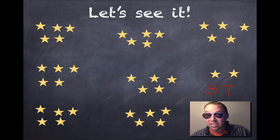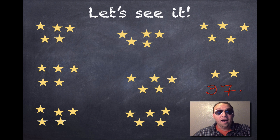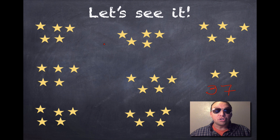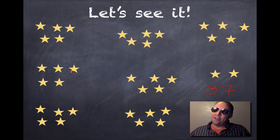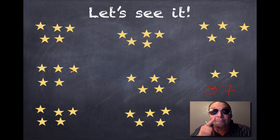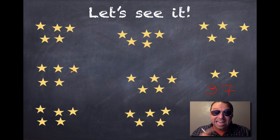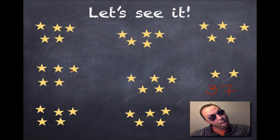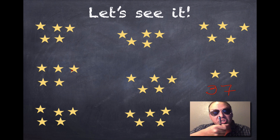We have thirty-seven stars on this computer screen. And I know that because I used groups of five and skip counting to figure that out. I'm going to show you how to use groups of ten next, because that lets you count really big numbers. I will see you in that video.